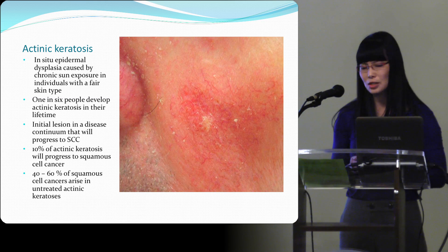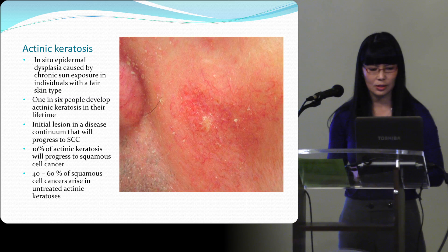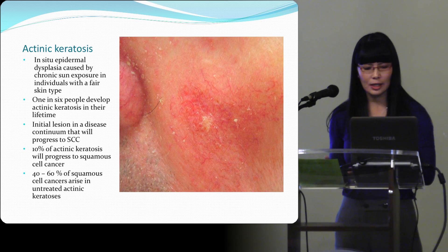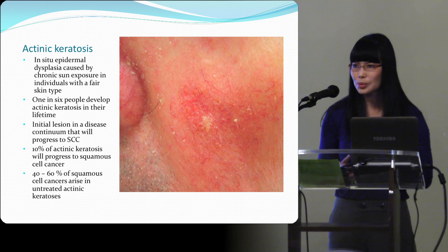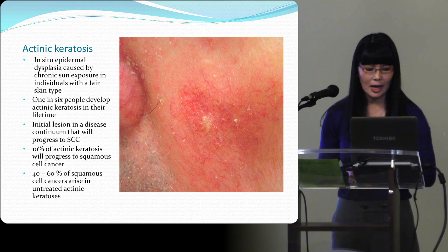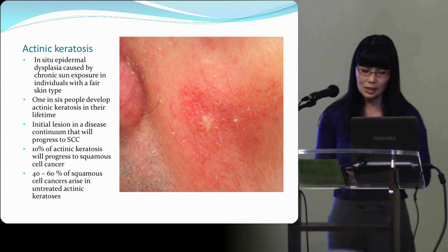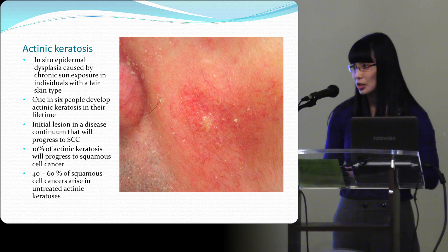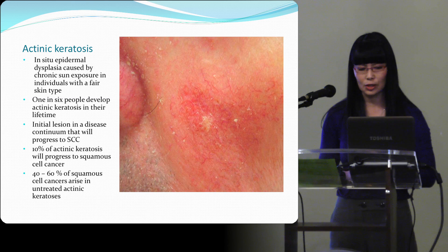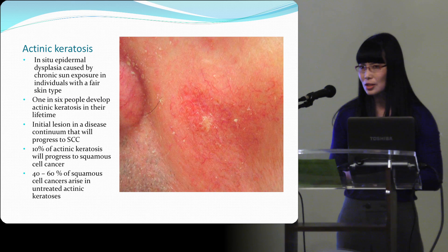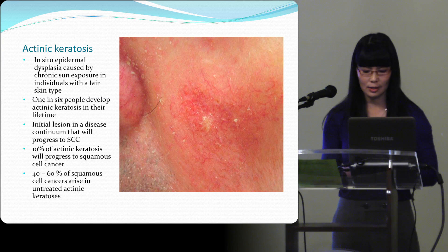Actinic keratosis can progress to squamous cell cancer. About 10% are estimated to turn into squamous cell cancer, and about 40 to 60 percent of squamous cell cancers derive from untreated actinic keratosis. We can't really say which one is going to turn into a cancer, so you really have to treat all of them that you can.